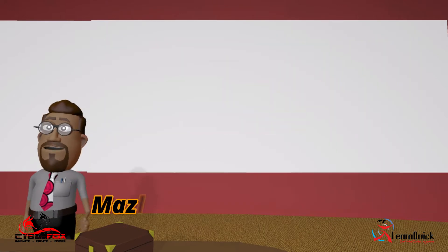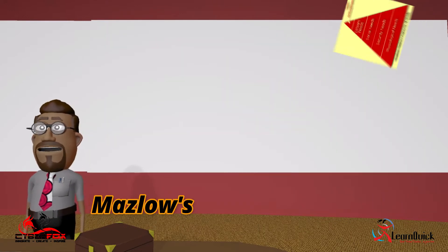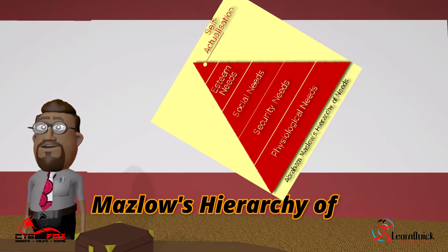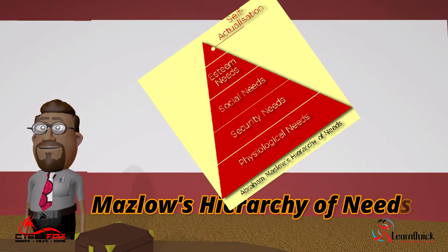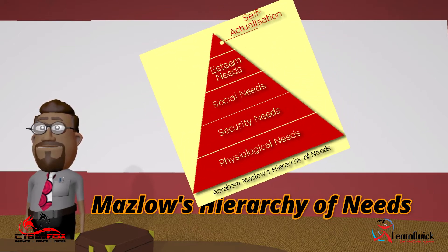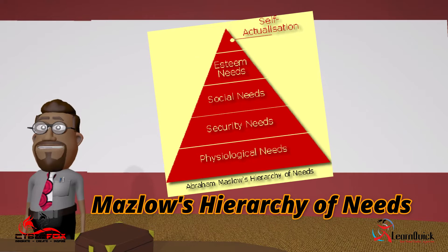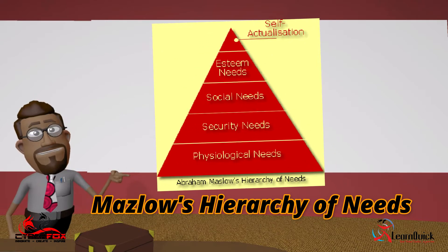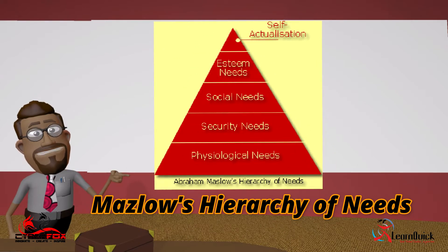We will briefly cover Maslow's hierarchy of needs. It is a five-tier pyramid that we will cover from top to bottom. The categories on the pyramid are self-actualization, esteem needs, social needs, security needs, and physiological needs.